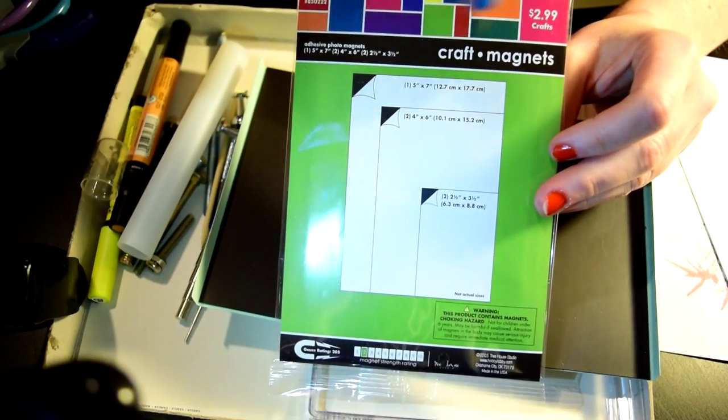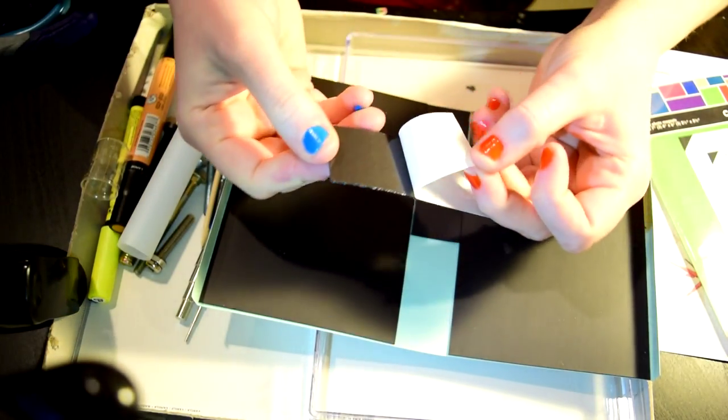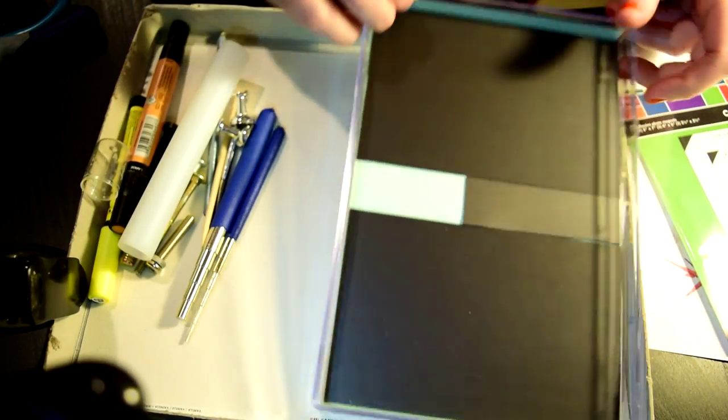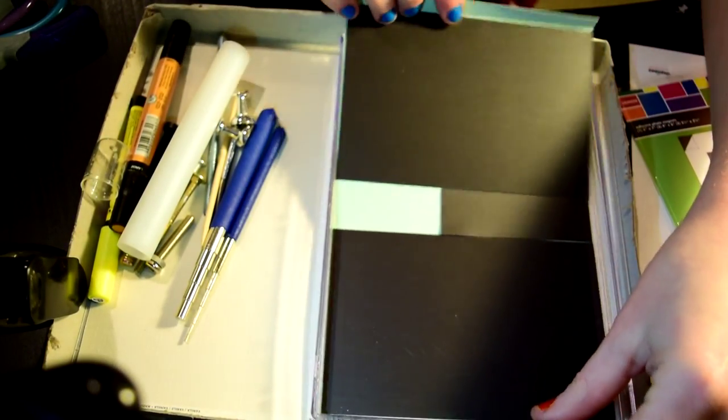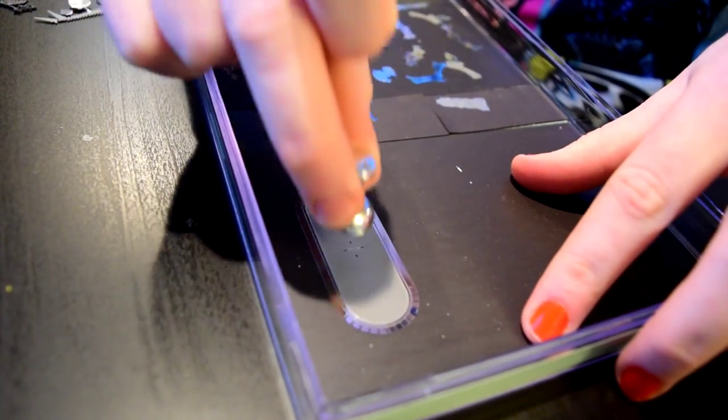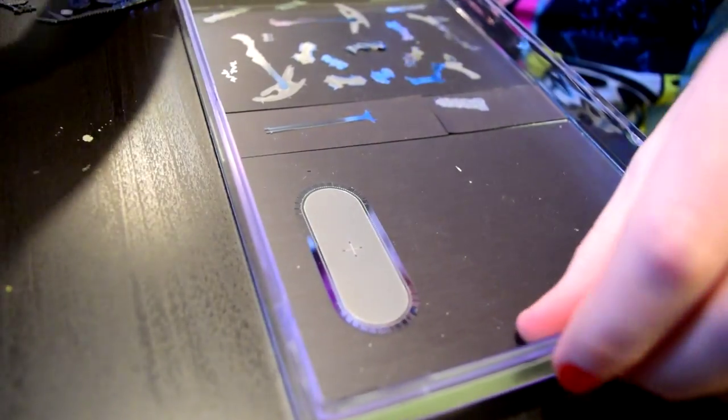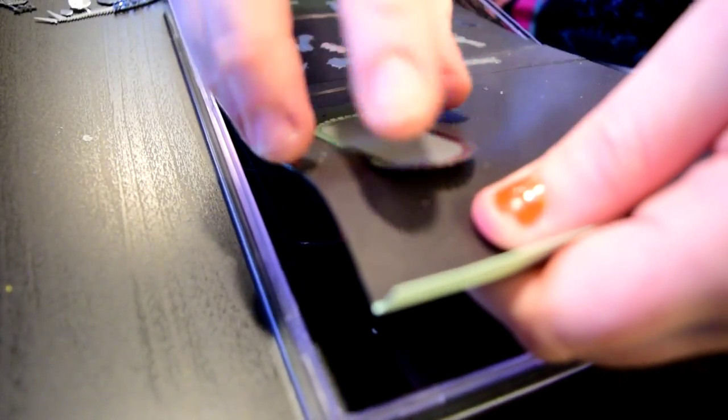I got this magnet set at Hobby Lobby for $3. I put the sticky back magnet on a piece of paper and I set it in a tray. It allows you to pull it out of a tray and bend it. This is helpful when you have a big part that doesn't come up on the magnet.